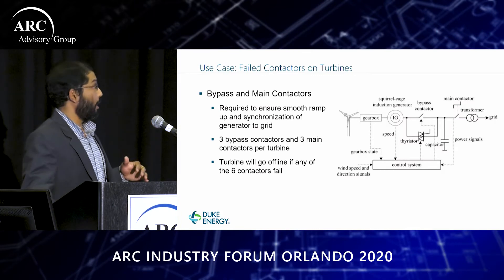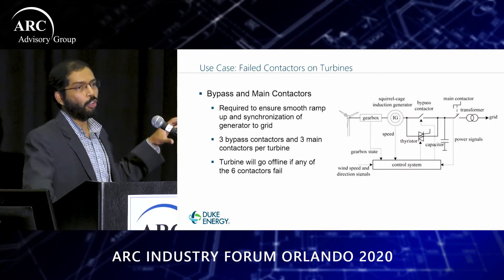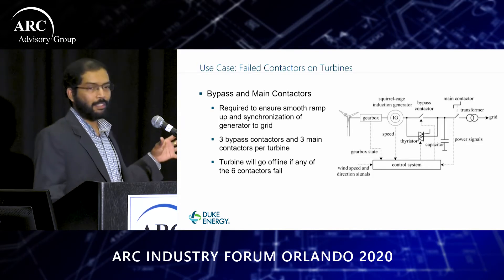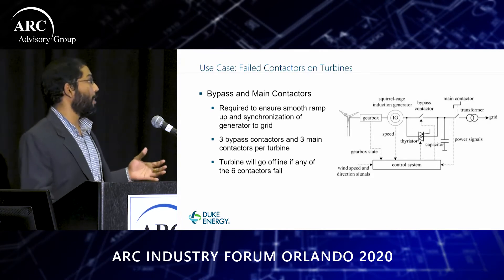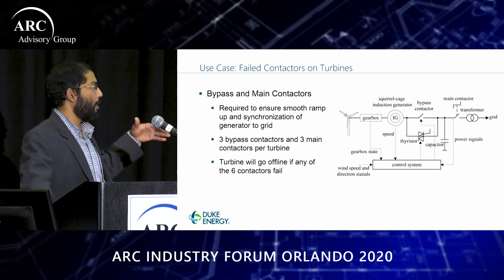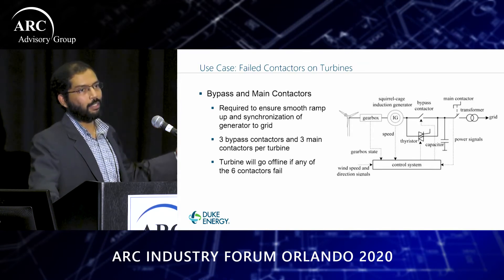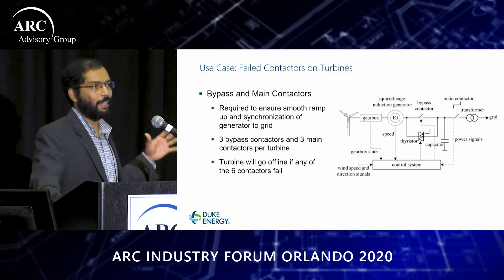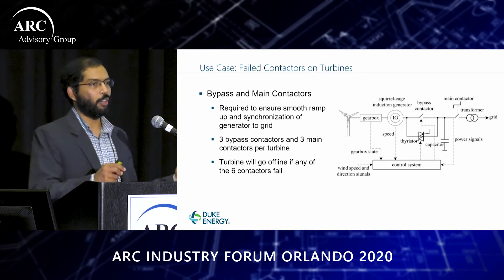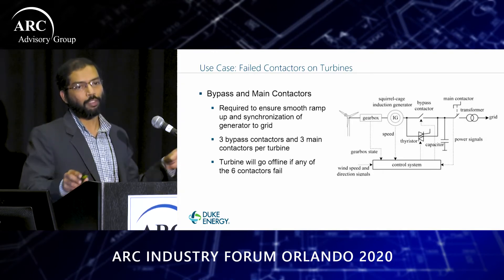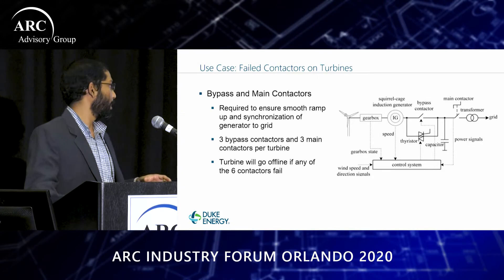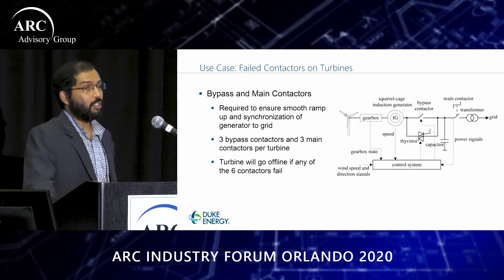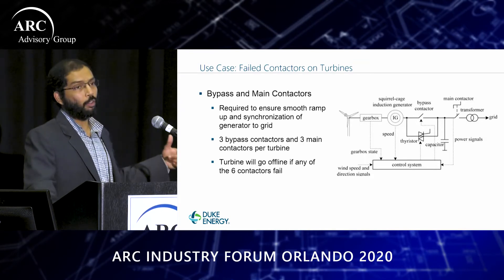For this particular use case, I'll be talking about contactors. These are essentially big relays and there are six of them on each turbine. Their purpose is to make sure that when a generator kicks in it ramps up smoothly and synchronizes with the grid. Certain models of turbines have a design flaw and contactors tend to fail more frequently at one of our sites. A turbine will go offline if any one of the six contactors fail.